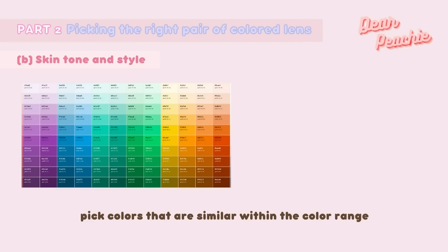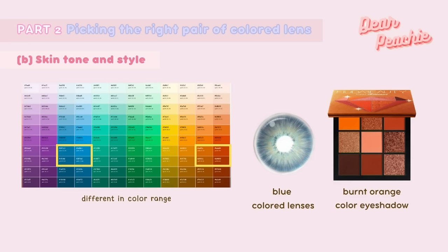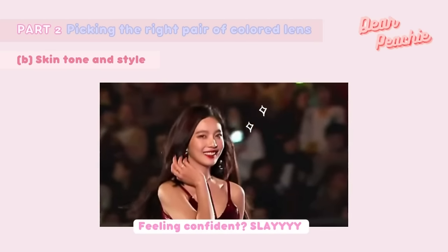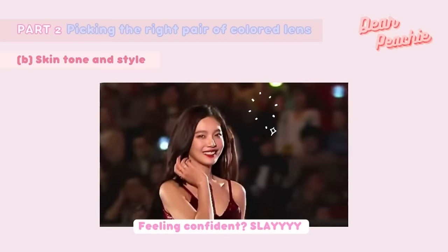You can also match the color of the lens with your eyeshadow. First, try to pick a lens and eyeshadow from the same color range — if your eyeshadow is warm tone, your lens should be too. Second, pick similar colors within the range; for example, honey brown lenses pair well with green eyeshadow for a harmonized, balanced look. Highly contrasting combinations like burnt orange eyeshadow with blue lenses are hard to pull off for makeup beginners, though confident wearers can try anything.